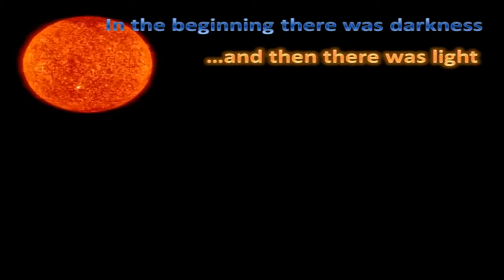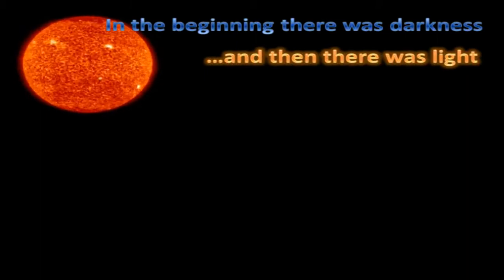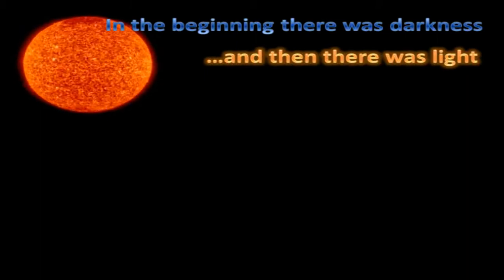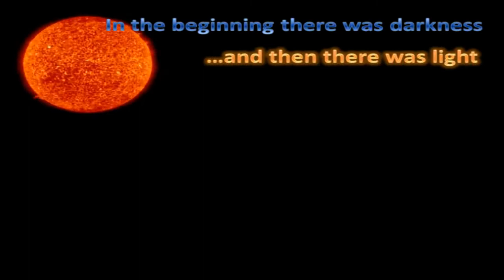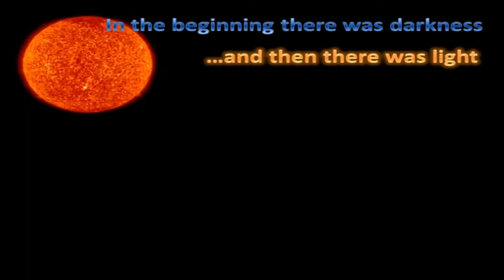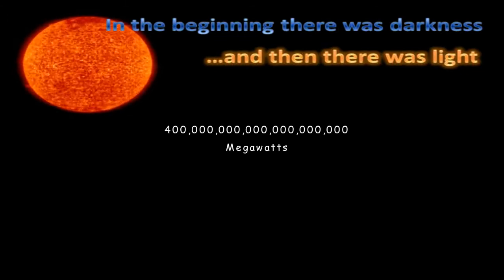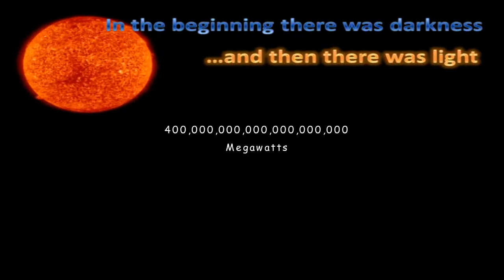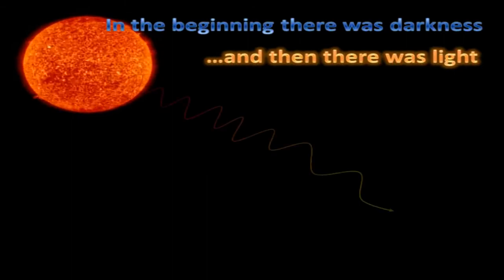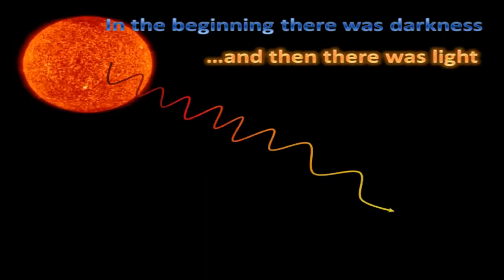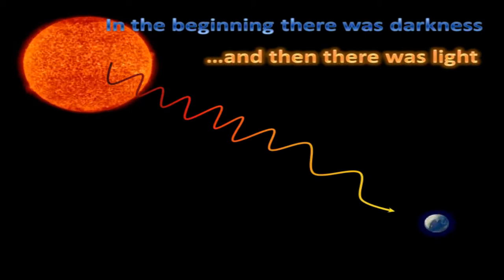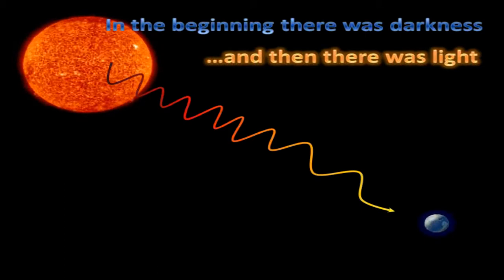The sun. What an amazing object. This nuclear furnace consumes 700 million tons of hydrogen every second, producing helium and 400 billion billion megawatts of energy, an inconceivably large number. The energy spreads out into the universe in the form of photons of light, and a vanishingly small fraction of them land on planet Earth.